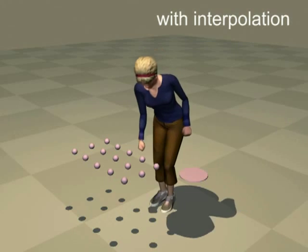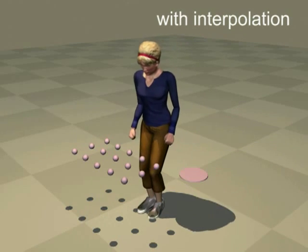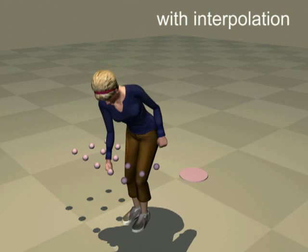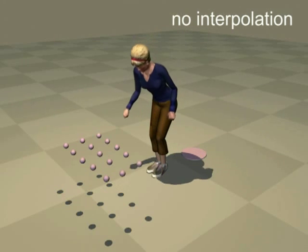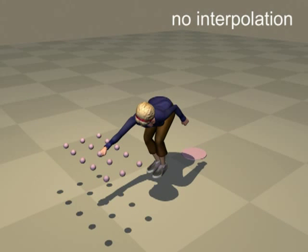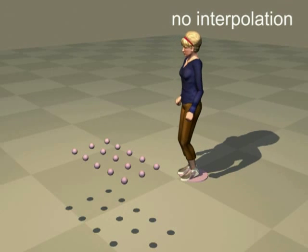This solution is computed with interpolation. Without interpolation, the optimizer often cannot find any solution or finds an inefficient one. This solution is unnatural because she reaches too far. This solution is inefficient because it starts from a bent pose.